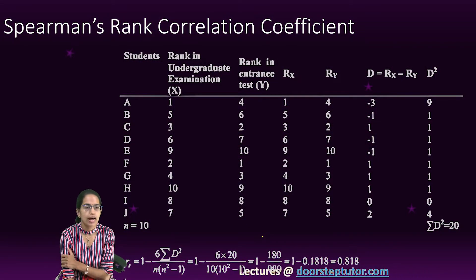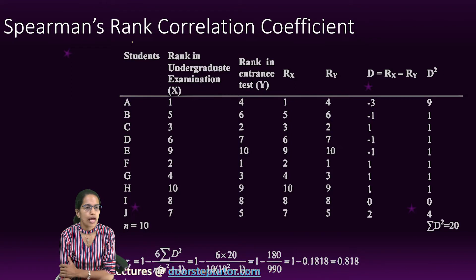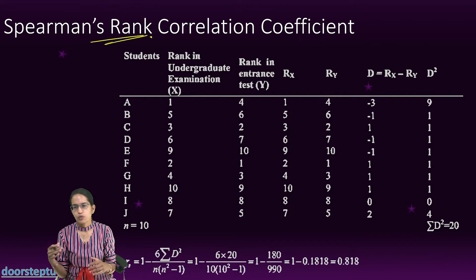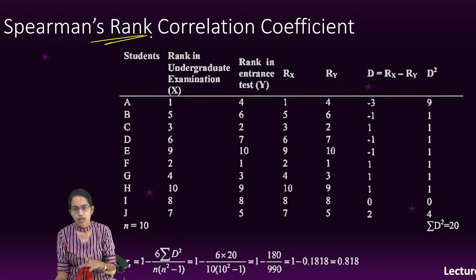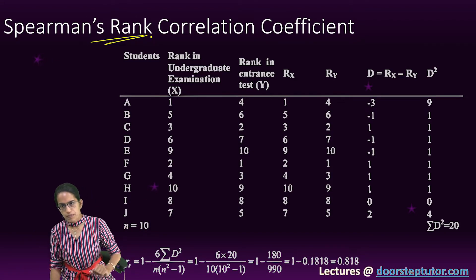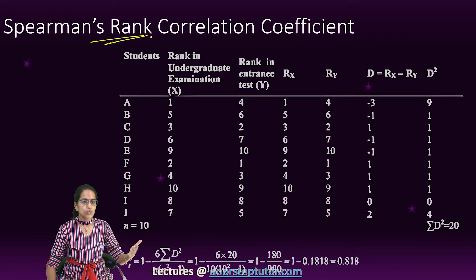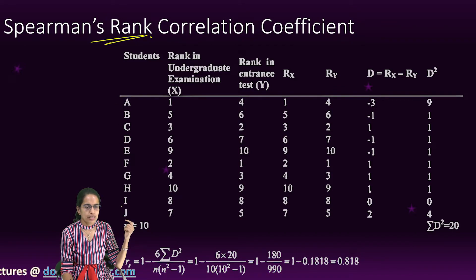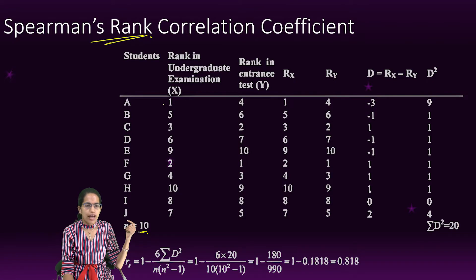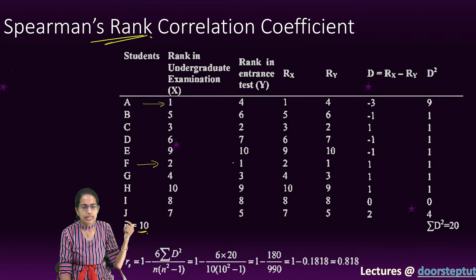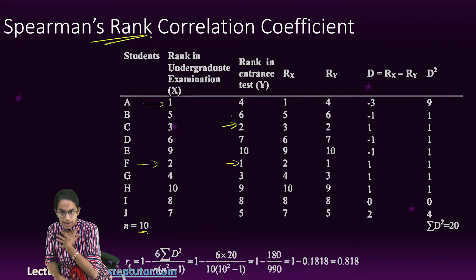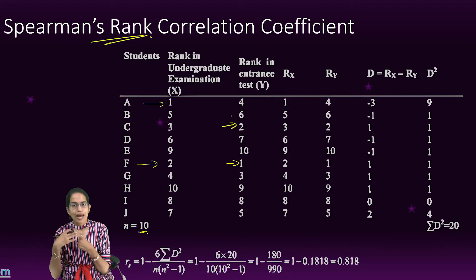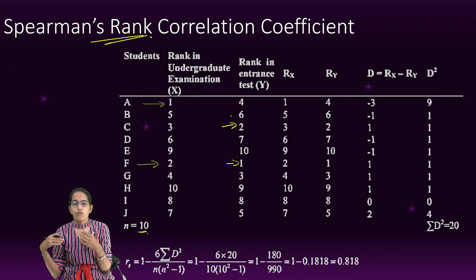Two coefficients that we would understand are based on ranking — this is known as the Spearman rank-order correlation. For example, consider a painting competition where 10 people appeared and two judges evaluated them. Judge one ranked person A as first and F as second, however the second judge ranked F as first and C as second, because what each judge liked in the painting was very different.